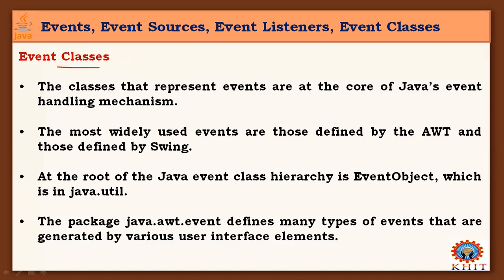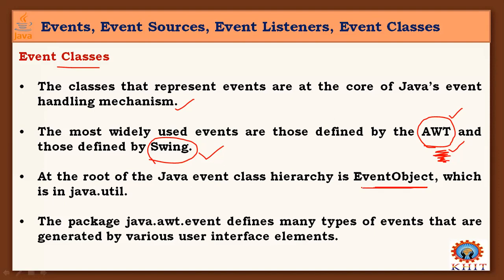Event classes are at the core of Java's event handling mechanism. The most widely used events are those of the Abstract Window Toolkit and those defined by Swing — the same concepts used with Applets. At the root of the Java event class hierarchy is EventObject, which is in the java.util package. The java.awt package defines many types of events generated by various user interface elements.